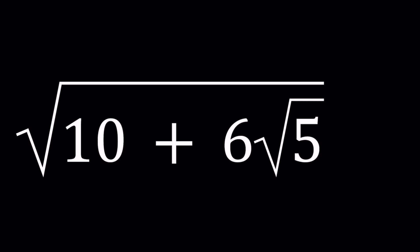We're going to be denesting a radical. We have the square root of 10 plus 6 root 5 and we're going to be simplifying this expression.